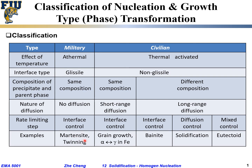Examples: martensite phase transformation is a military type. For civilian, we have grain growth — one region gets larger. The alpha to gamma phase transformation in iron is the same composition — both iron — but from alpha phase (BCC) to gamma phase (FCC), that is a change in crystal structure and lattice parameter; you don't need diffusion, so it's interface-controlled. For solidification and eutectic phase transformation, they involve diffusion, and we will talk about them later.